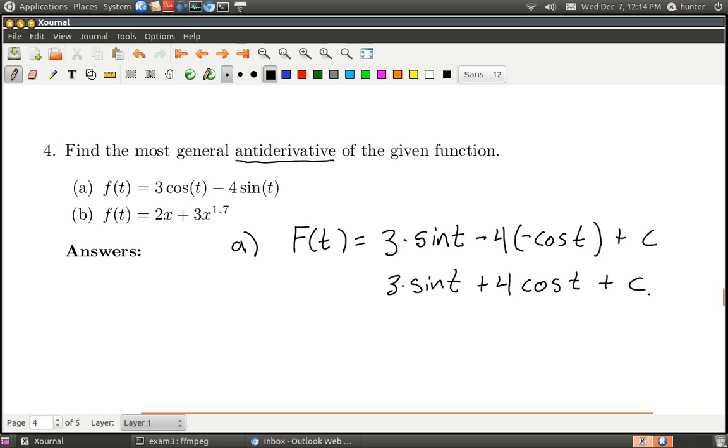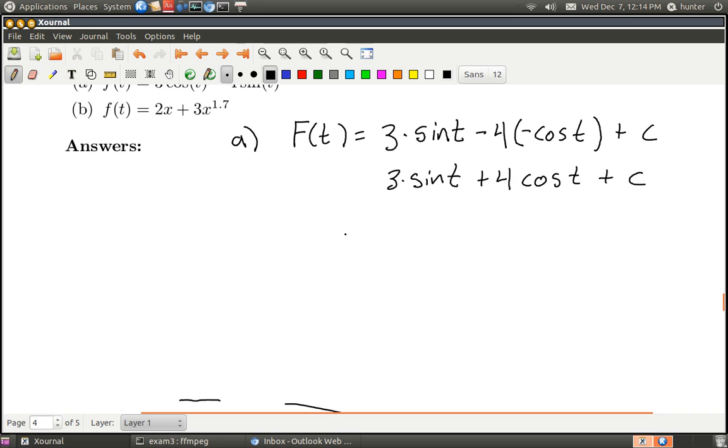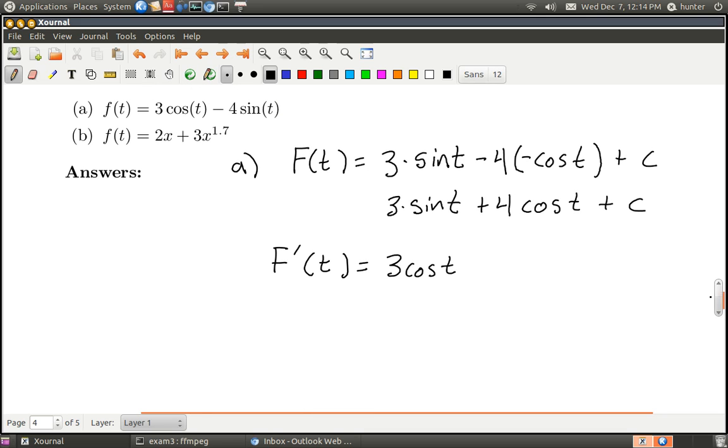I'm going to cancel this negative and I have 3 sine t plus 4 cosine t, and you never have to wonder if you were right with these questions because you can always just take the derivative of your answer and make sure that it's the right thing. So what happens when I take the derivative of what I wrote down? I get 3 cosine t, and let me scroll up so you can see the original question, so that looks good.